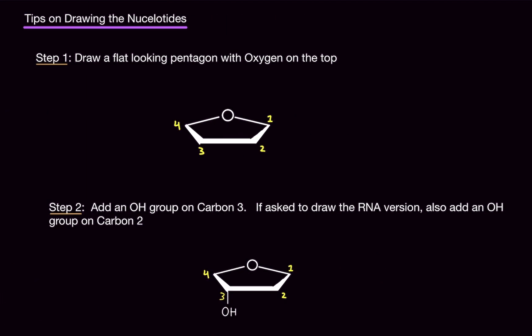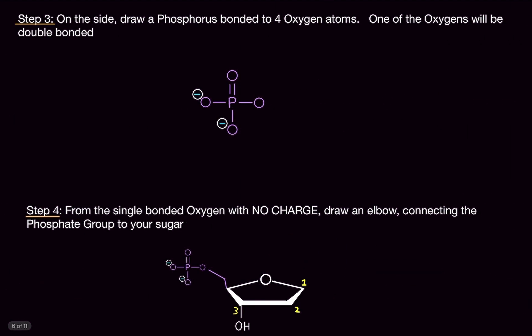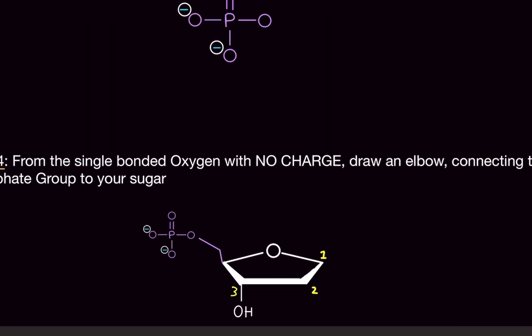Let's do the actual step-by-step on drawing the nucleotides. Step one: draw a flat-looking pentagon with the oxygen on top. You'll have four carbons and then an oxygen at the top. Step two: add an OH group on carbon number three. If asked to draw the RNA version, you must also add the OH group on carbon number two. Step three: on the side, draw a phosphorus bonded to four oxygen atoms — basically a phosphorus surrounded by four O's, with one of the oxygens double bonded. From the single-bonded oxygen with no charge, draw an elbow connecting the phosphate group to your sugar on carbon number four.